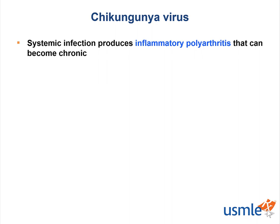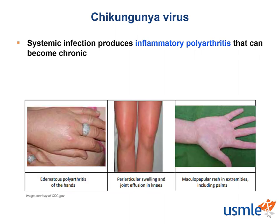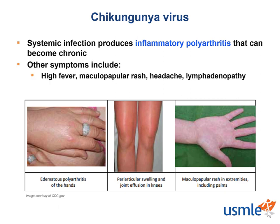It's not just joint pain — it's a polyarthritis involving multiple joints, like the hands and knees pictured here, and it's inflammatory. The classic signs of inflammation in Latin are rubor, dolor, calor, tumor, and functio laesa — or redness, pain, heat, swelling, and loss of function. We see edema or swelling in the hand image, and redness with possible heat in the middle image. Other symptoms include high fever, a maculopapular rash as seen in the last image on the right, headache, and lymphadenopathy.